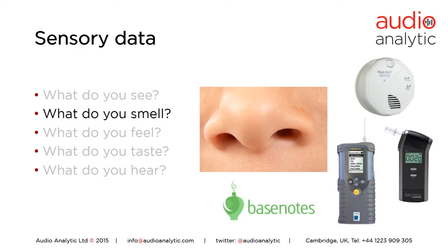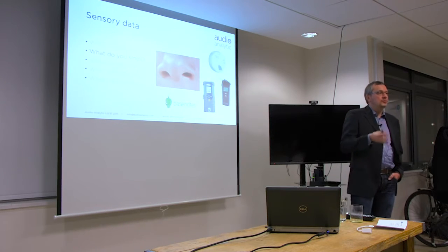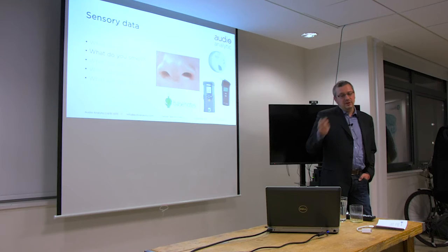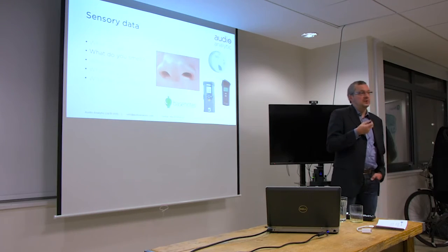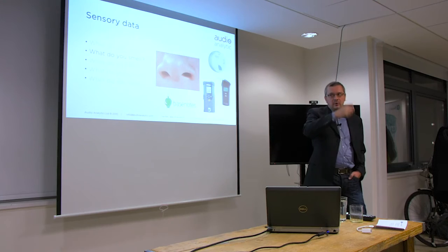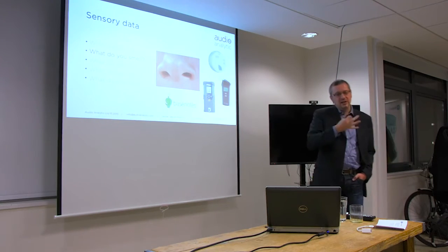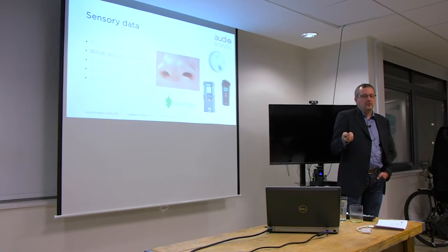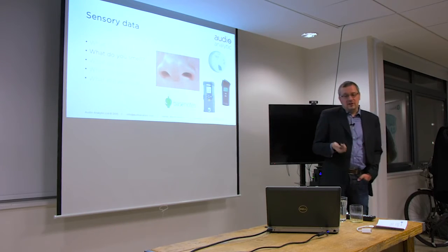One thing not directly related to a sensor but attempting to build value on sense of smell is a website called Base Notes, where they correlate perfumes and fragrances. It's a directory of fragrances telling you: if you like fragrance X, you might like fragrance Y. They built correlations between types of fragrances based on user-contributed data — people saying 'I like this perfume and that one.' It's a service based on something related to the sense of smell — a way of thinking about things in terms of sensory data.